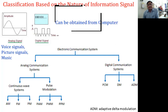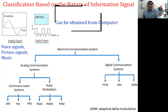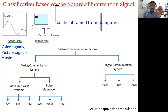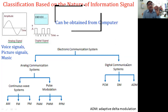Examples of analog signals are voice signals, picture signals, and music, whereas examples of digital signals are binary signals generated from a computer. If your information signal is an analog signal, we have an analog communication system. If your information signal is a digital signal, we have a digital communication system.